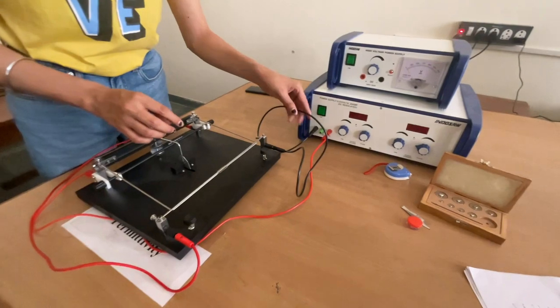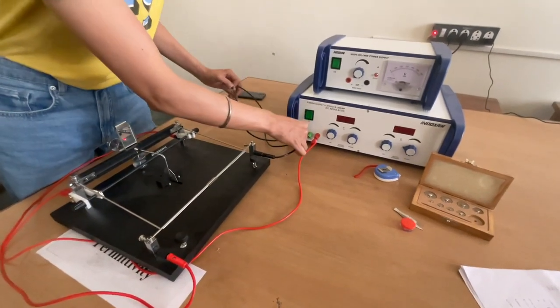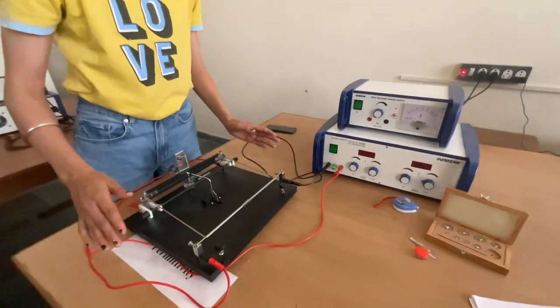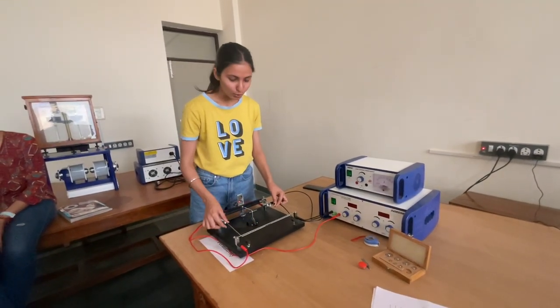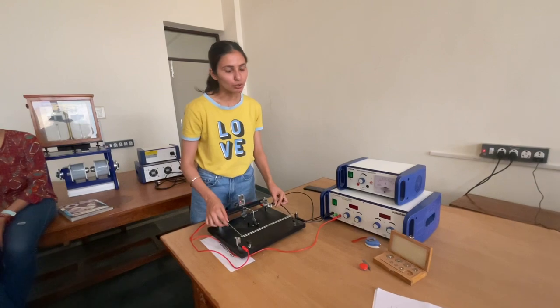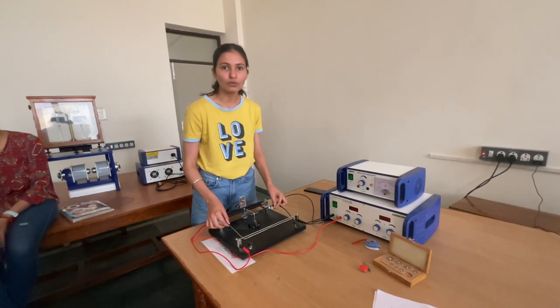Then, we will connect the short rod to the negative terminal of the power supply. We will make connections so that the current direction is in the short rod and U-rod in opposite directions.